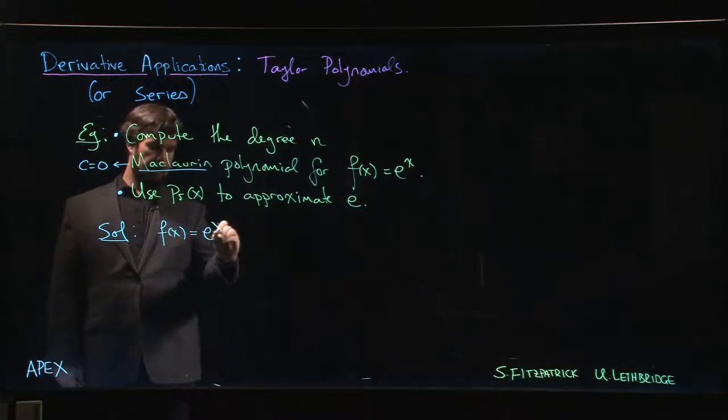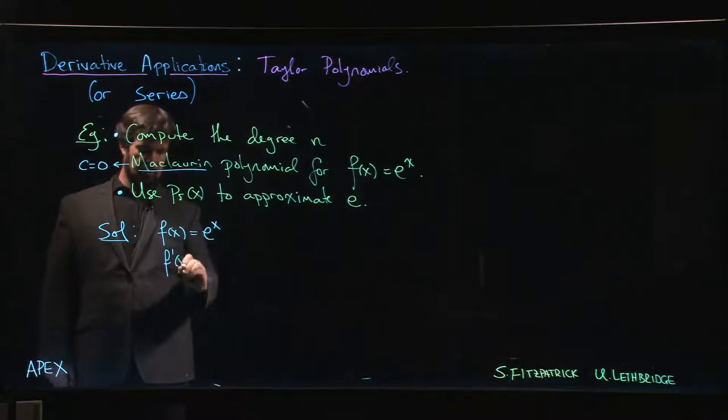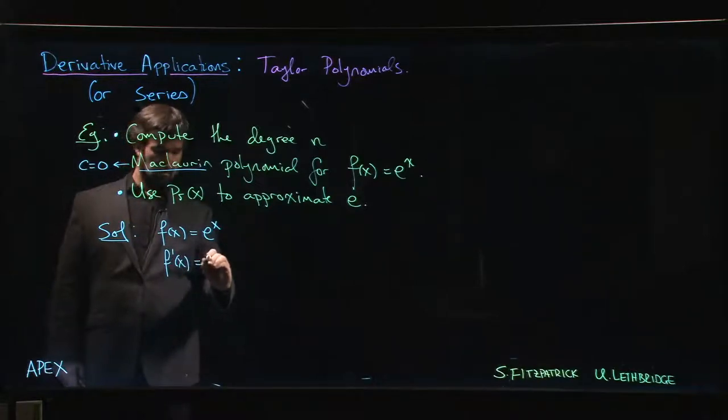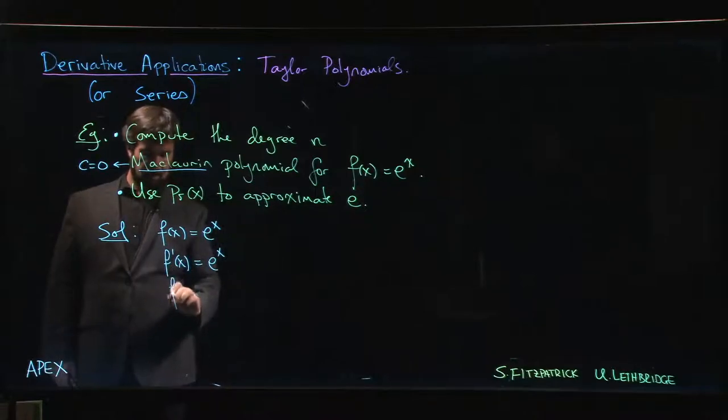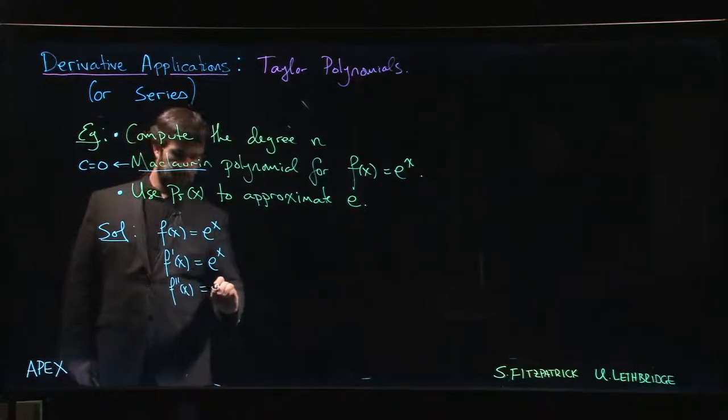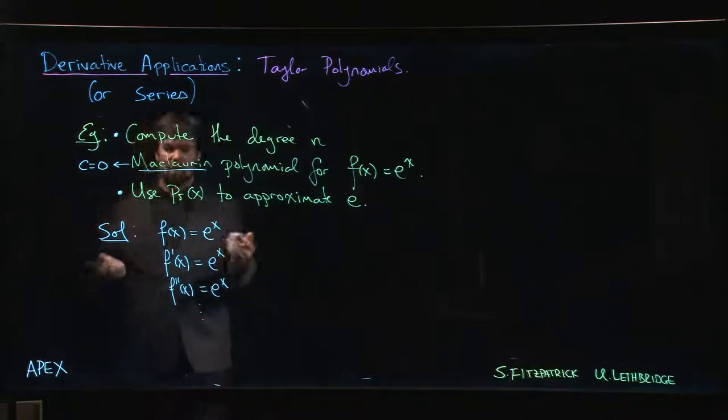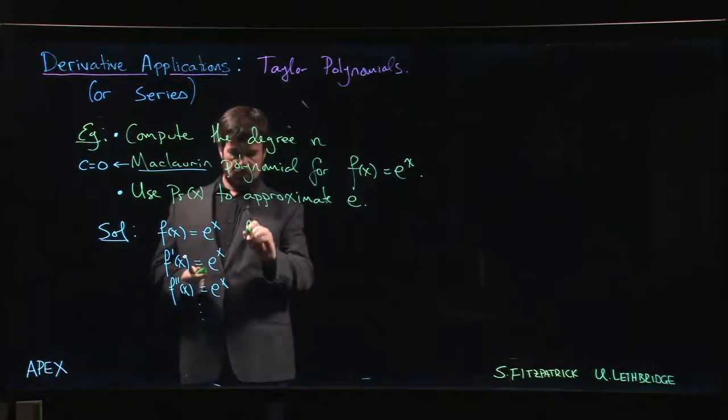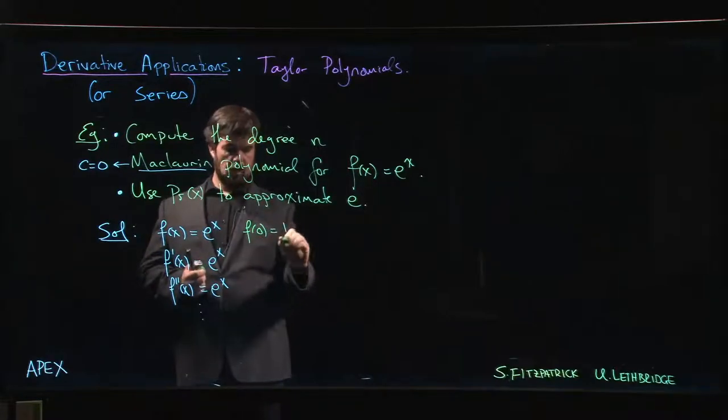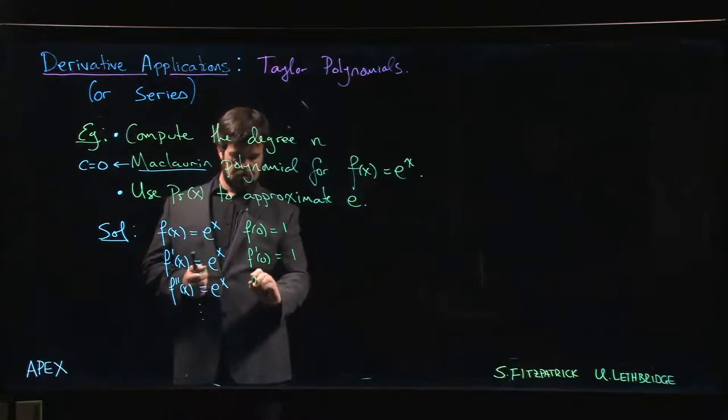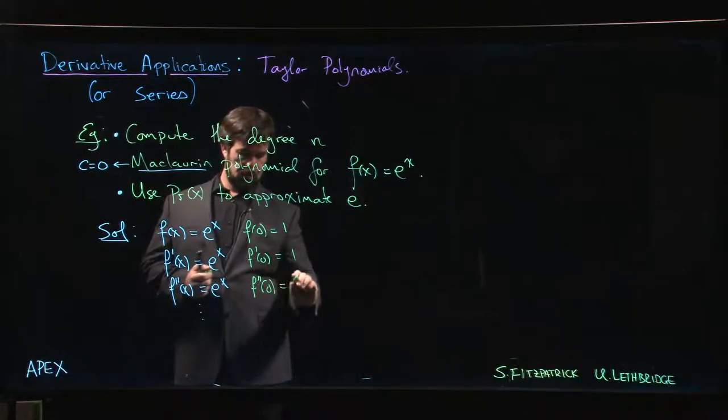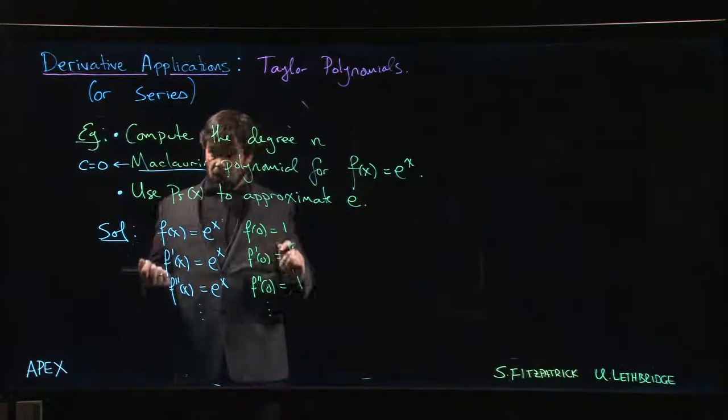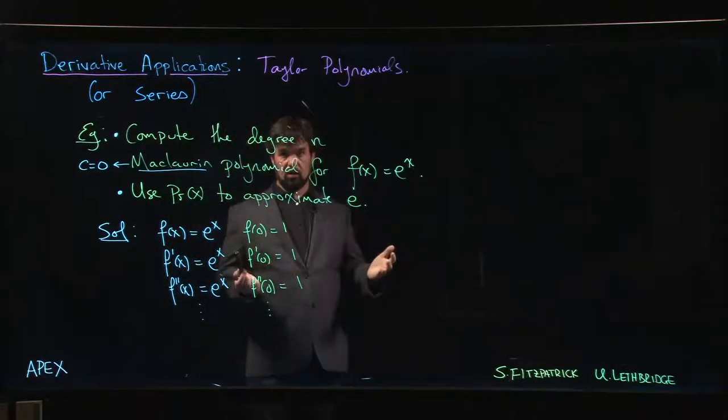So f(x) is e to the x, f'(x) is e to the x, f''(x) is e to the x. Okay, you get the idea—nothing happens when you take derivatives of the exponential function. So f(0) is 1, f'(0) is 1, f''(0) is 1. In fact, all the derivatives of the exponential function are equal to 1 at 0.